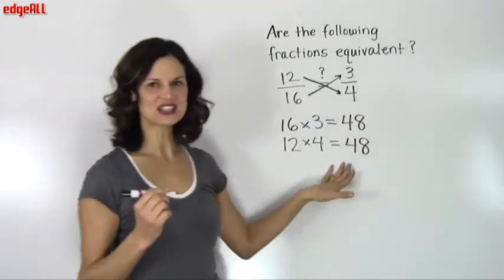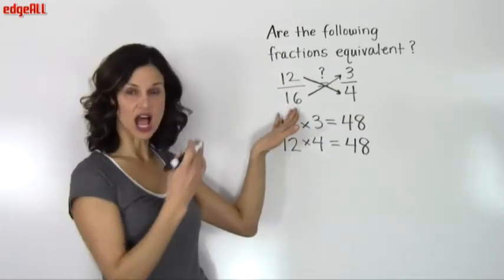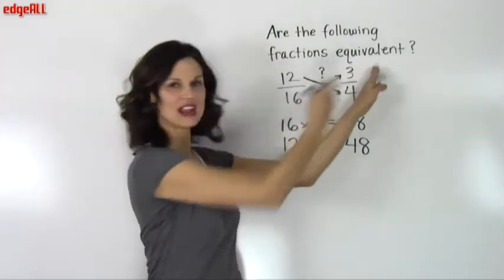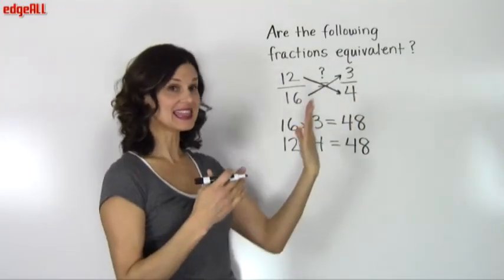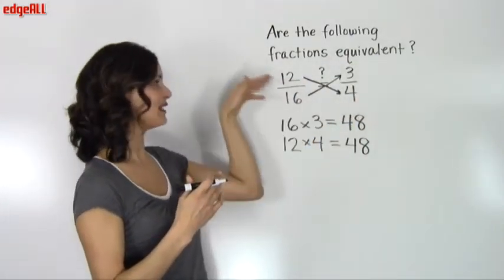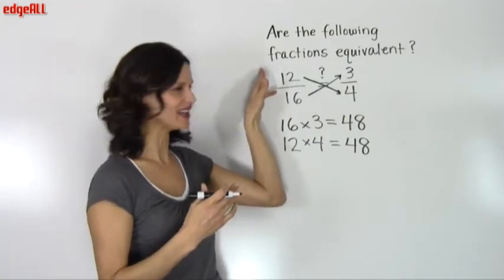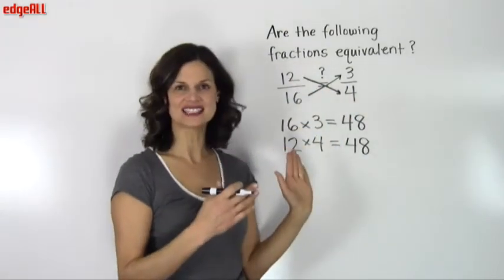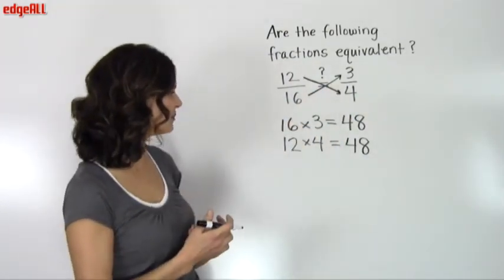So you want to make sure that you have multiplied the denominator from the first fraction with the numerator of the second, and then switch places, the numerator of the first fraction with the denominator of the second. You need to make sure that you're crossing when you multiply these numbers.